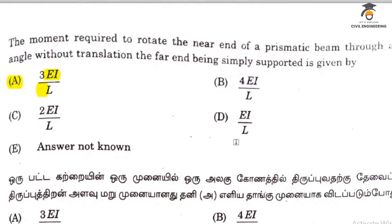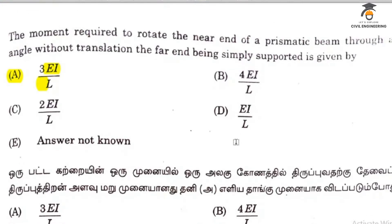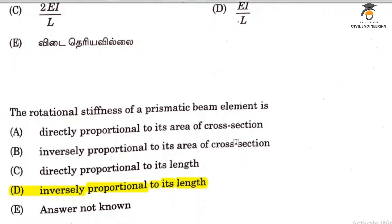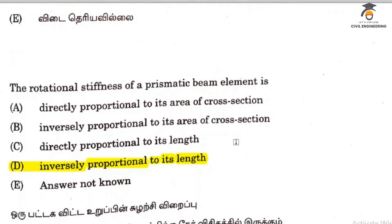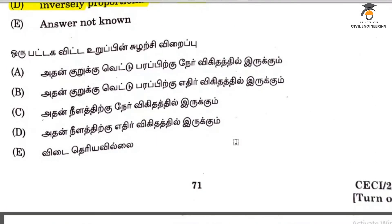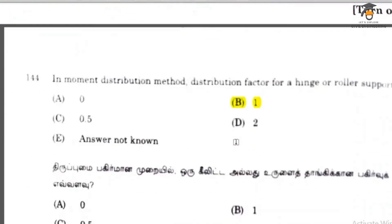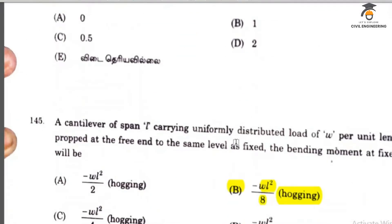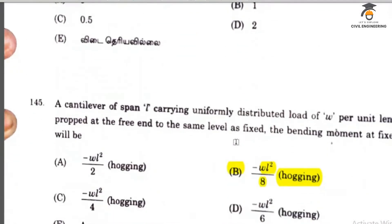The moment required for a simply supported beam is 3EI by L. The rotational stiffness of a prismatic beam element is inversely proportional to its length. Question 145 answer is minus WL squared by 8.